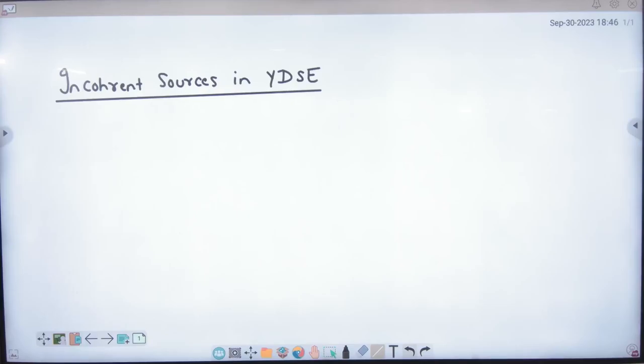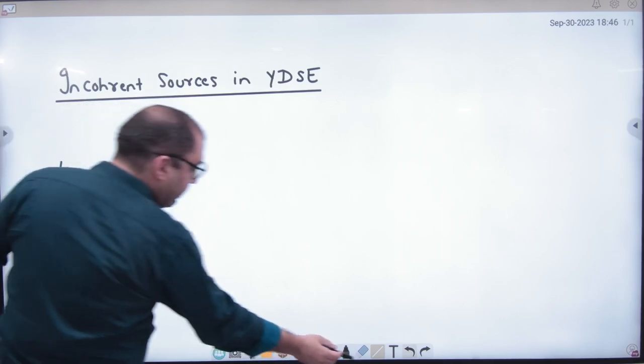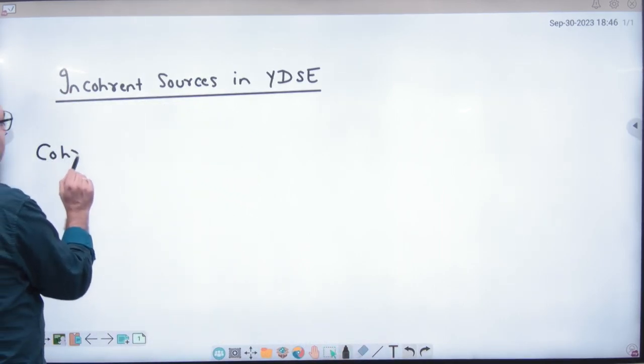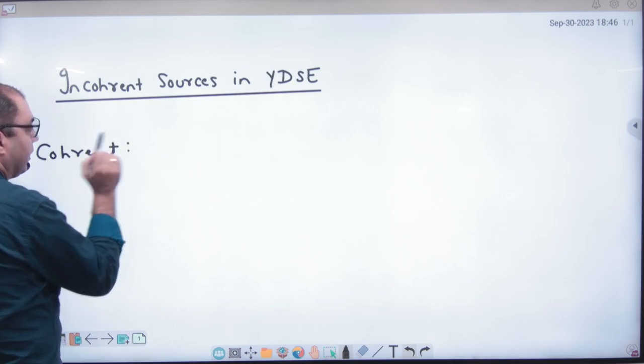We have the rule that the two sources should be coherent. Coherent source doesn't come, but if it comes, I will tell you what to do. If the source is coherent, we have discussed this. If your source is coherent, what do you do?